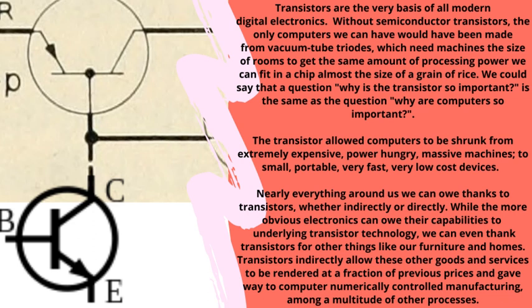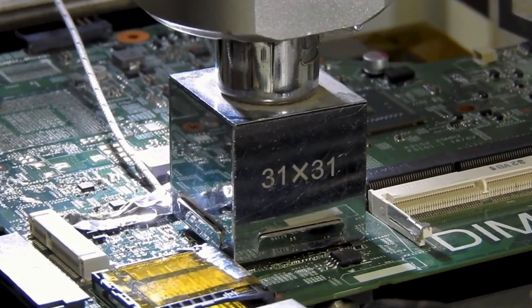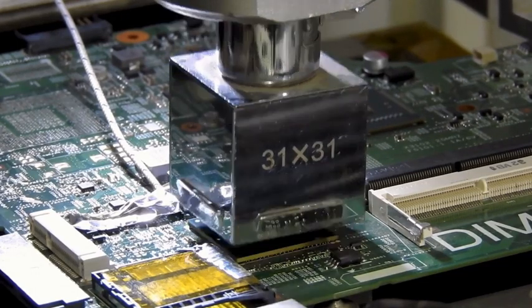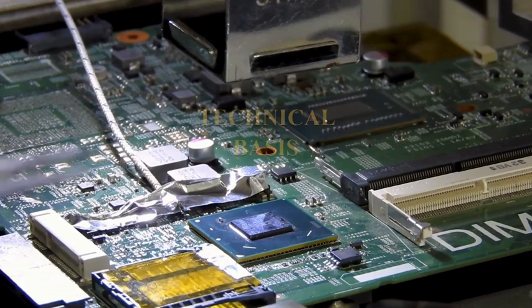Nearly everything around us we can thank transistors for, whether indirectly or directly. While the more obvious electronics owe their capabilities to underlying transistor technology, we can even thank transistors for things like our furniture and homes. Transistors indirectly allow these other goods and services to be rendered at a fraction of previous prices and gave way to computer numerically controlled manufacturing, among a multitude of other processes.